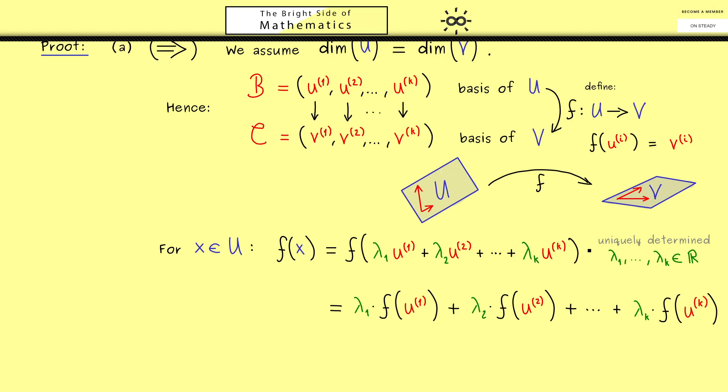However these we have already defined as the new basis vectors in V. Hence what you should see is now f(x) is already completely determined just by this definition here. In other words now in general you can just treat the left hand side here as the definition of f(x). Therefore now there should be no doubt at all we have defined a map from U to V. And indeed by this definition here we immediately know it's a linear map.